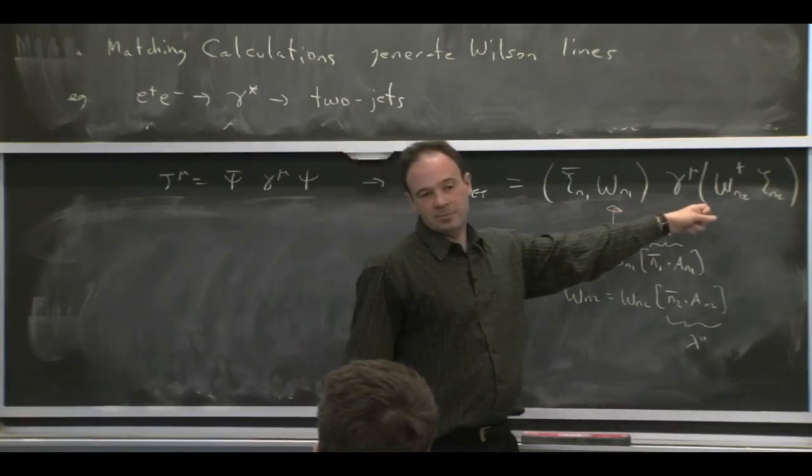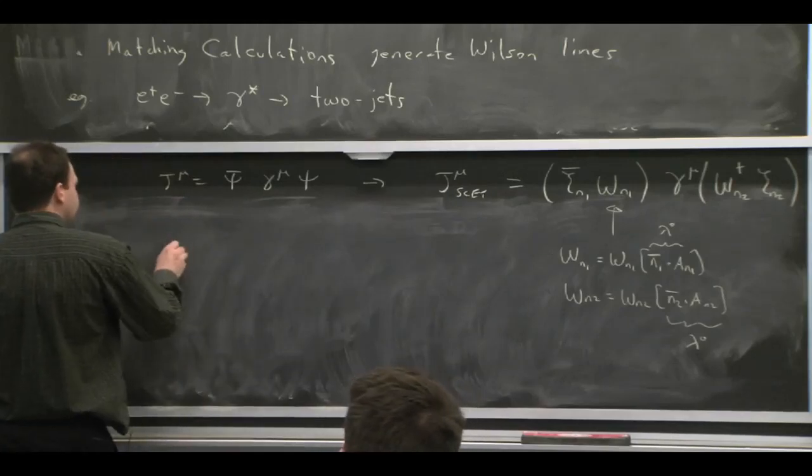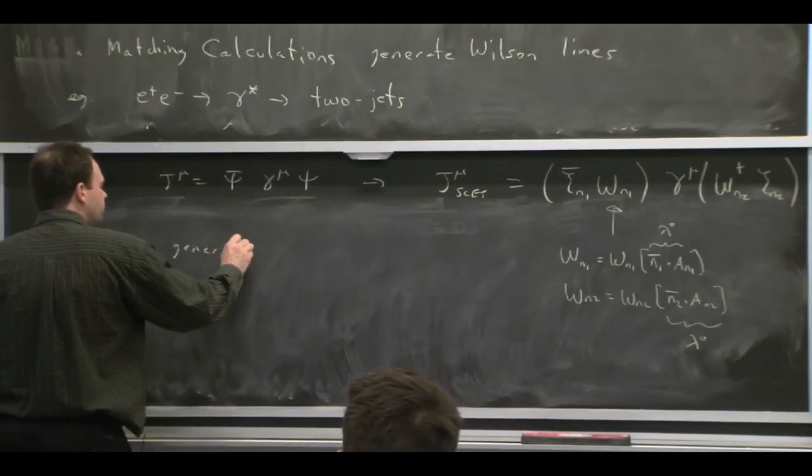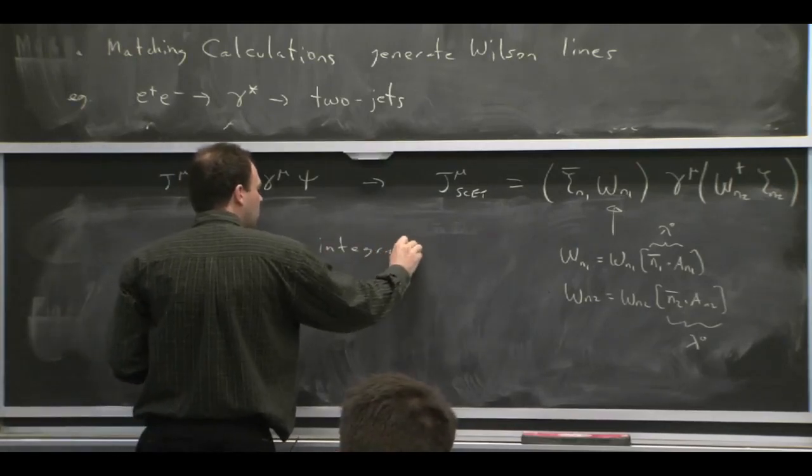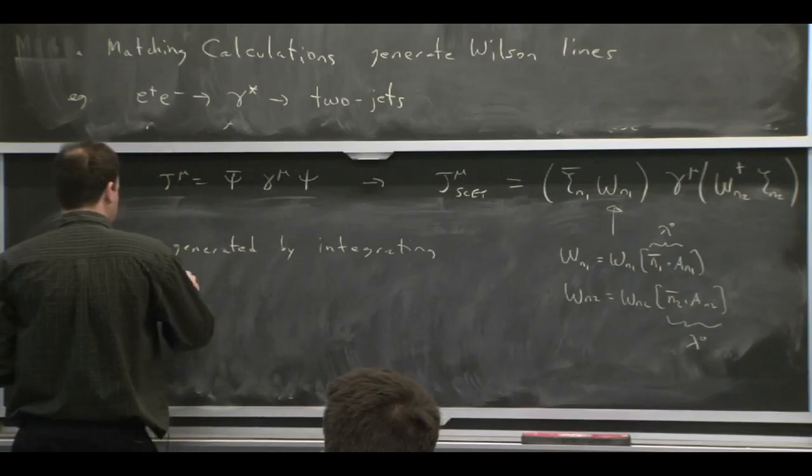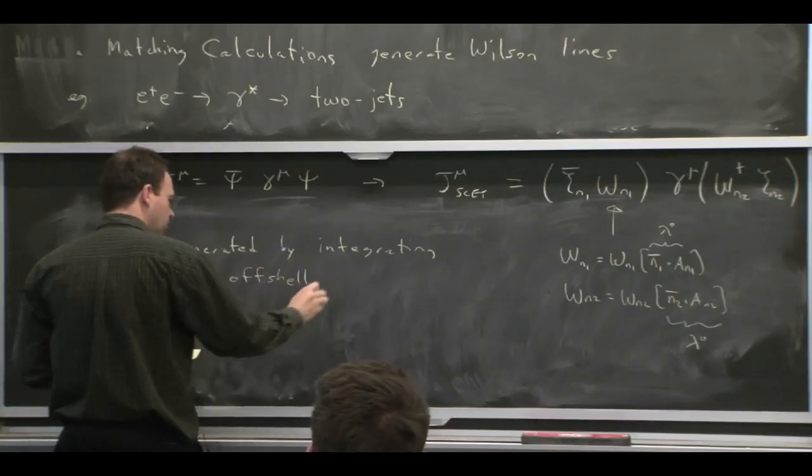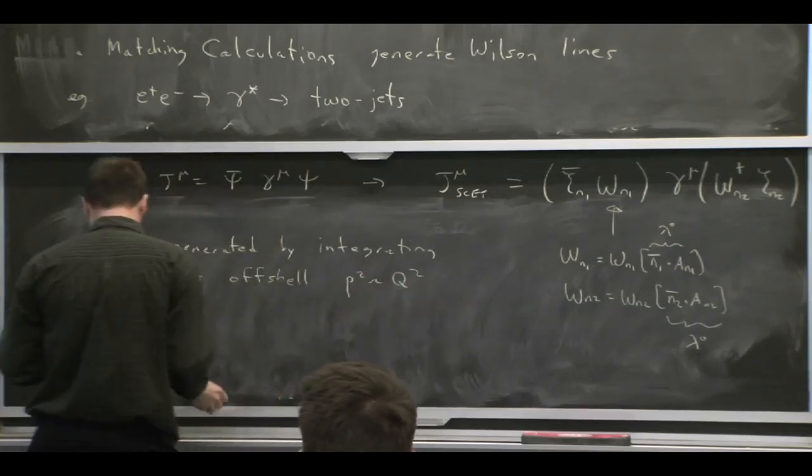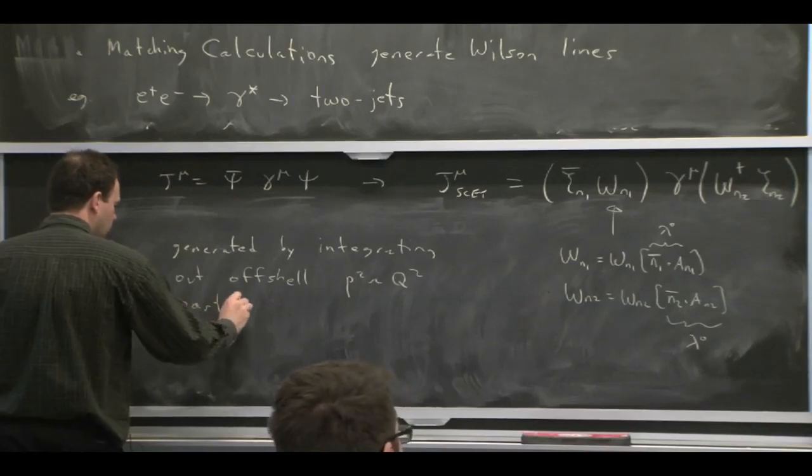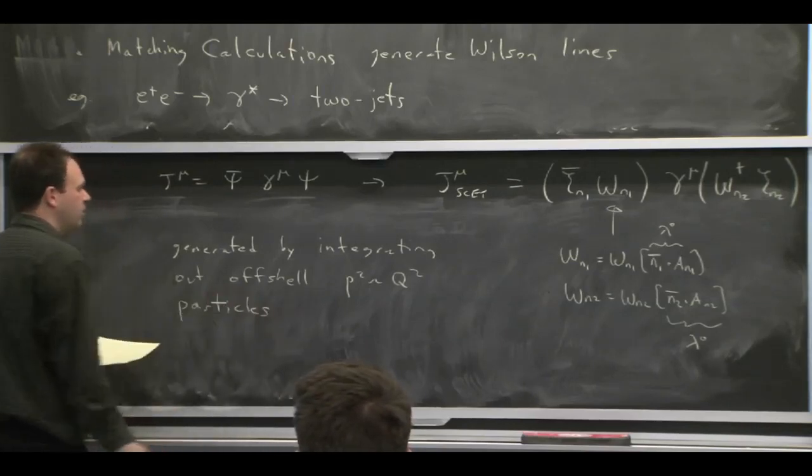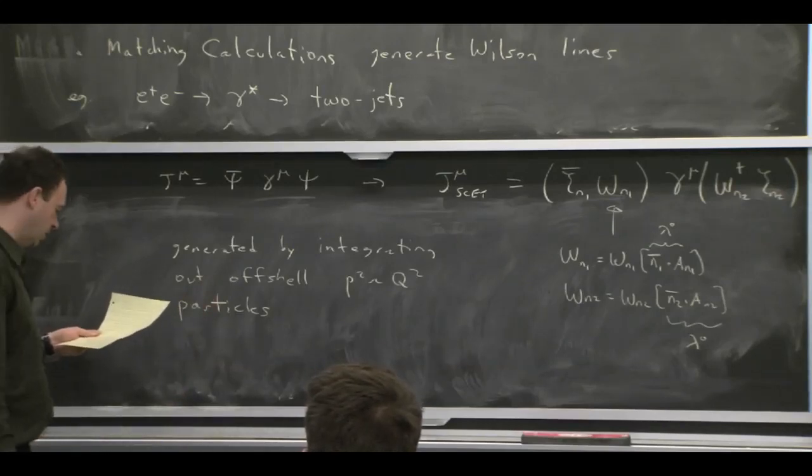And when you go through the process of integrating out off-shell particles, just like we did for Bs to gamma, where we attached gluons and we found that some lines were off-shell, so we had to integrate them out. If you do that for this process, you get this operator. So when we construct the effective theory, we have to integrate out off-shell particles. And by doing so, it generates this Wilson line operator.